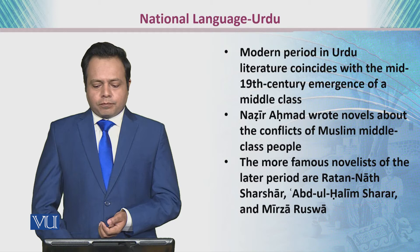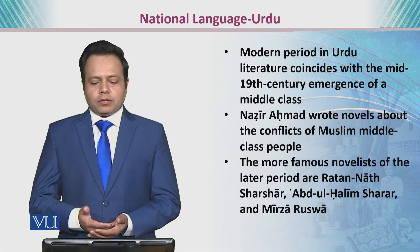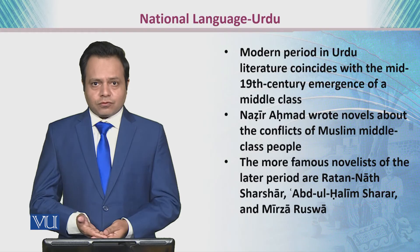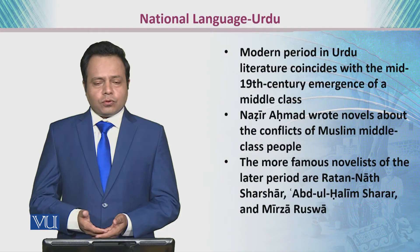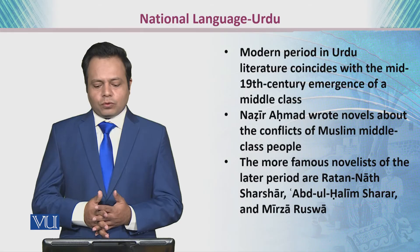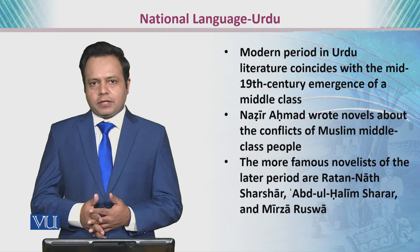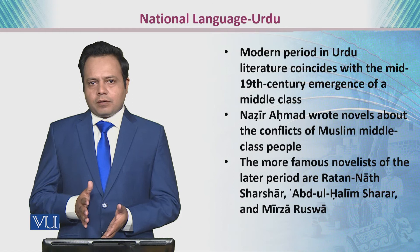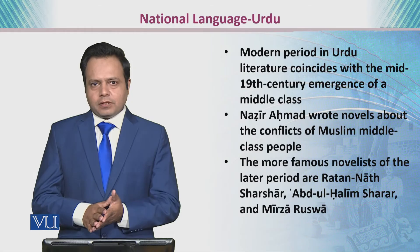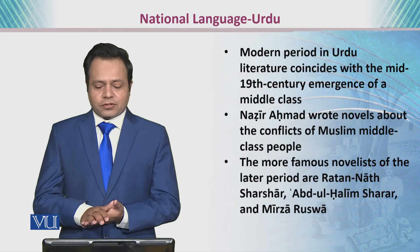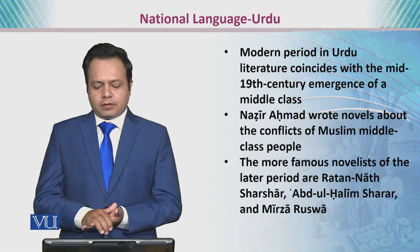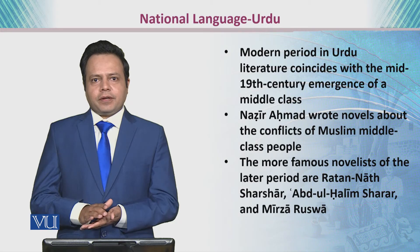Modern Urdu literature coincides with the middle of the 19th century, by the emergence of a new middle class during the colonial period. Deputy Nazir Ahmad wrote many novels in the Urdu language on the conflict of the Muslim middle class people, and most of the novels talk about the tension in interrelationships and communication. More famous novelists of that period are Ratanath, Abdul Halim Sharar, and Mirza Rossa.